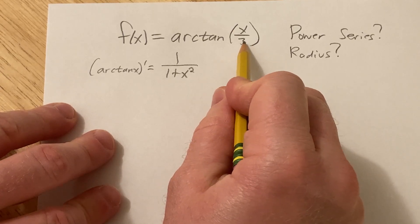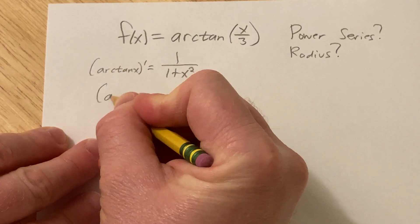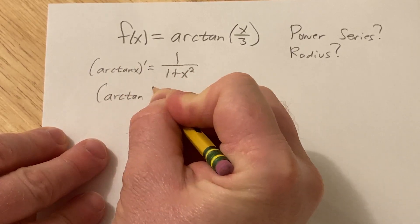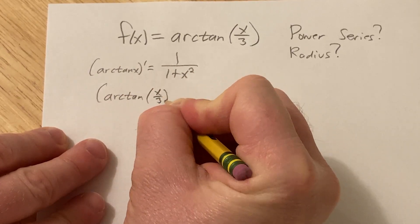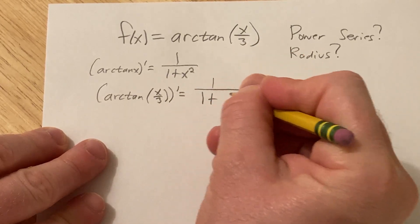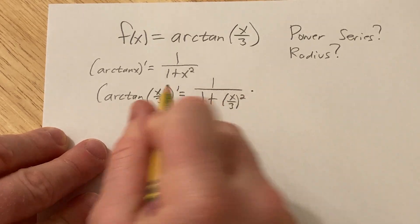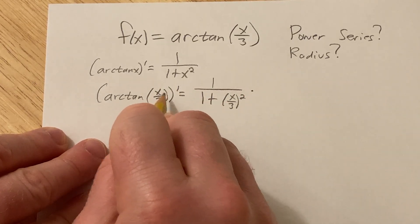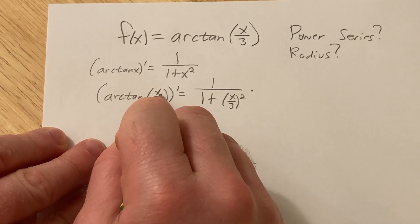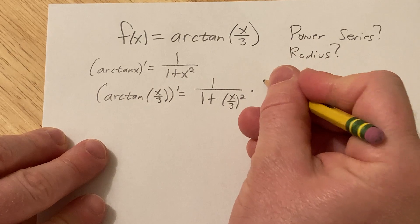So here, if you take the derivative of this function, so if I were to take the derivative of arctangent of x over 3, this is 1 over 1 plus x over 3 quantity squared times the derivative of the inside function via the chain rule, which is really 1 third times x so the derivative of x is 1 so you just get 1 third.